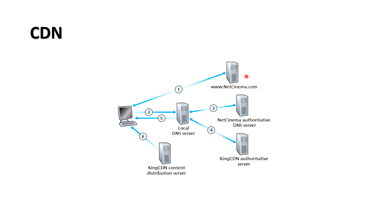Let's say this is a client, and there is the Net Cinema dot com server, the authoritative Net Cinema DNS server, the CDN content distribution network, and a server cluster from which data will be served. When the user visits net cinema dot com and clicks a link, the request is processed by the local DNS server (LDNS), which then forwards the request to the authoritative Net Cinema DNS server. From there, the content provider gives the IP of the CDN — named King CDN — authoritative server. In the next step, King CDN shares the IP of the closest CDN cluster to the client, determined based on the LDNS location, and this is processed back to the client.